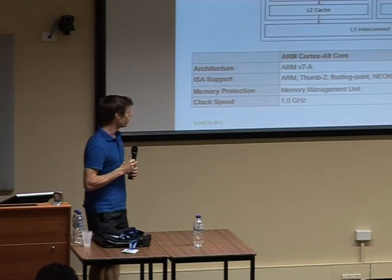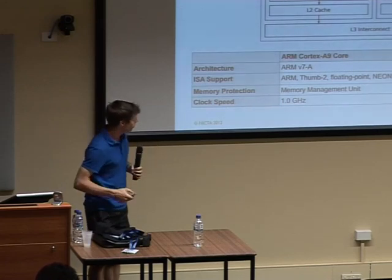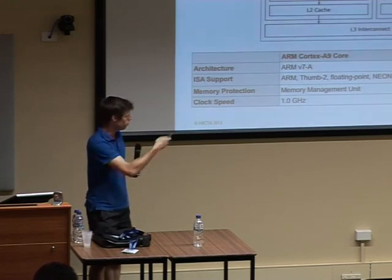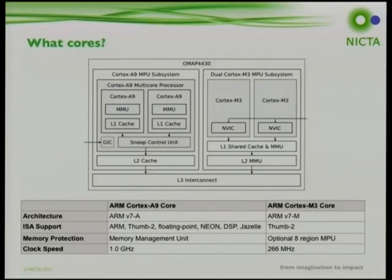The clock speed varies significantly: 266 MHz for the M3 versus 1 GHz for the A9, giving immediate performance asymmetry. The A9 subsystem is a traditional SMP with shared caches and hardware cache coherency. The M3 subsystem has a cache shared between its two M3 cores, but there is no common shared cache between the two subsystems, so cache coherency was always going to be an issue.